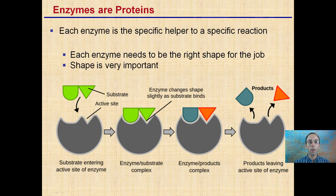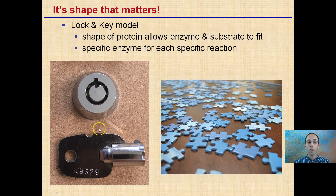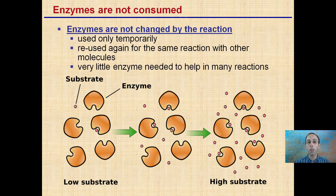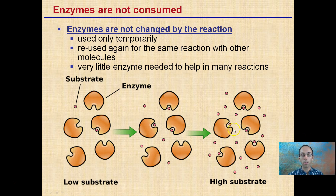Each enzyme is a specific helper to a very specific reaction and needs the right shape for the job — this is why proteins must have the proper shape to perform the proper function. Think of it as a lock and key. Importantly, these enzymes are not consumed or changed by the reaction — they are only used temporarily and can be reused again and again for the same reaction with other molecules. As a result, the body needs very few enzymes to assist its many reactions.